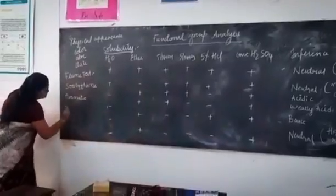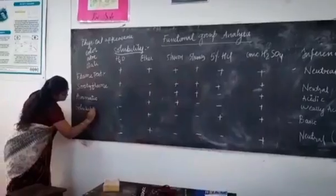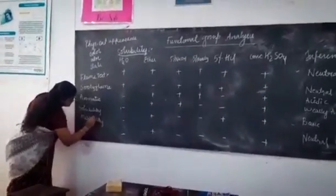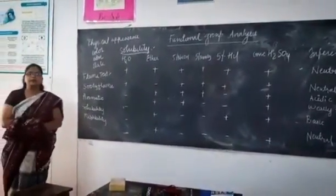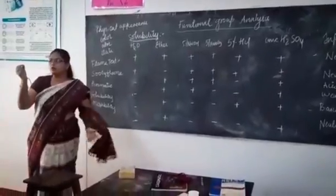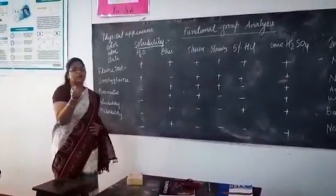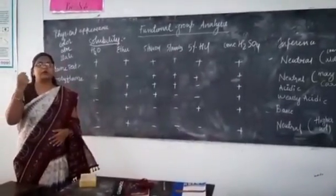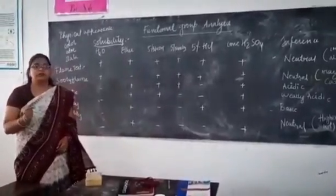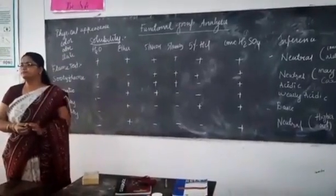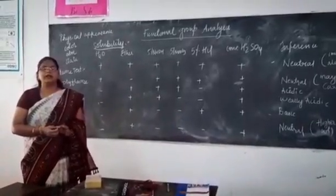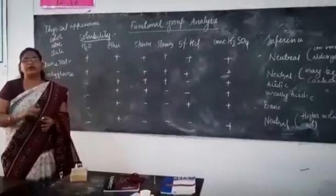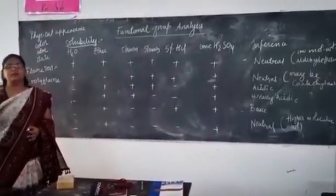What is the difference between solubility and miscibility? Solubility: when the solute is in solid state and the solvent is in liquid state, and you are trying to dissolve them together, that is called solubility. Miscibility: when both the solute and the solvent are in liquid state and you are trying to mix them together.